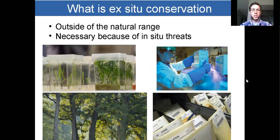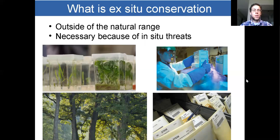What is ex situ conservation? It simply means conservation that takes place outside of a species' natural range. It can often be necessary because of in situ threats such as poaching, climate change, unstable habitat, or invasive species that may threaten the species with extinction. Examples of ex situ conservation include tissue culture, cryopreservation or ultra-cold freezing, seed banks, and living collections in botanic gardens.